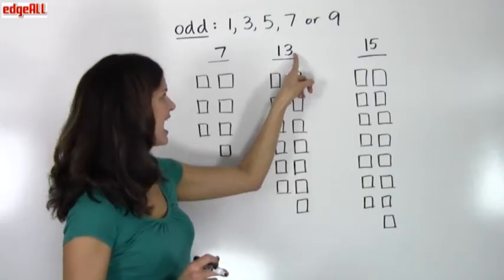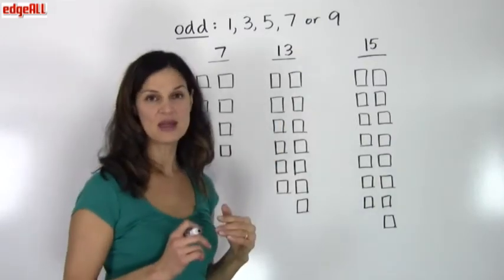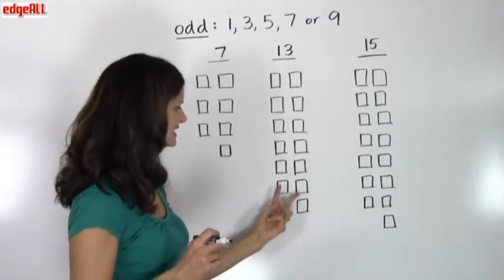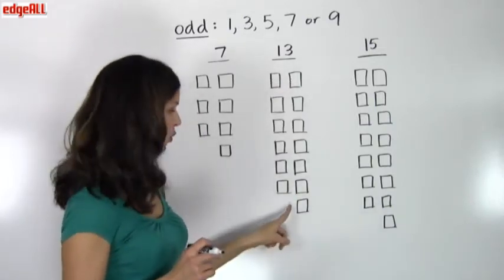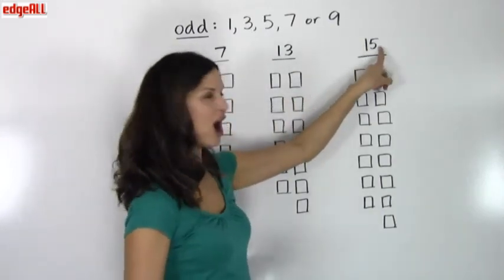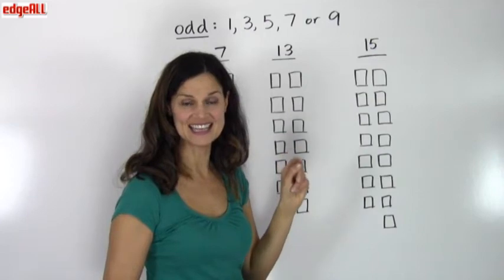And if we try to pair up 13 objects in sets of 2, we'll end up with 6 sets of 2 and 1 left over. 15 is an odd number because it ends in a 5.